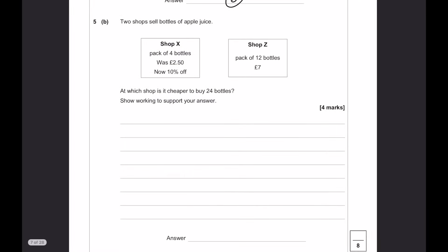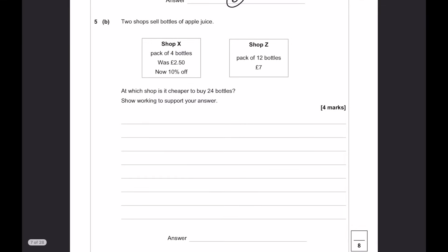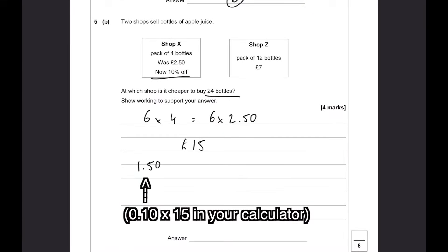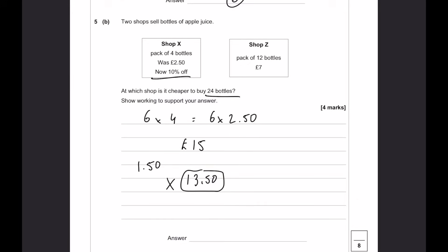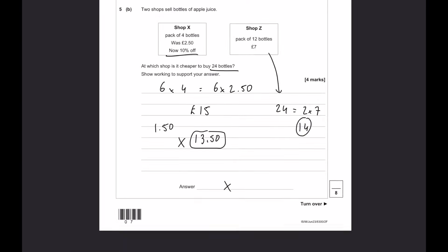Two shops sell bottles of apple juice. Shop x and shop z. 24 bottles we're after. So, we can get 6 packs of 4 bottles, which is going to be 6 times £2.50. And 6 times £2.50 is £15, which is now 10% off. So, that's actually going to be £1.50 less than £15, because that is 10%. So, that's going to be £13.50 for x. And shop z. A pack of 12 bottles is £7. So, 24 is going to be 2 times 7, which is £14. So, you can see that x is the answer here.